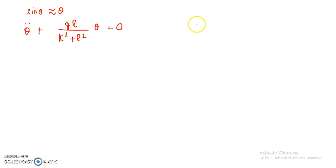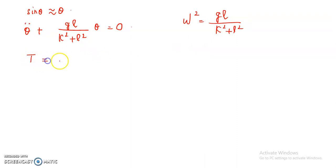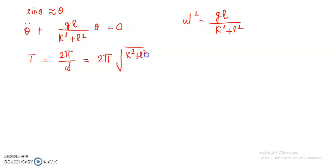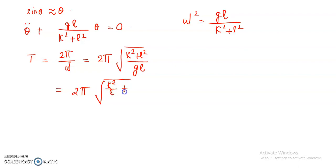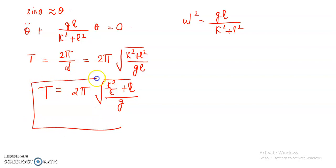This equation is similar to the simple harmonic motion equation. Comparing with the SHM form, we get omega squared equal to GL/(K² + L²). The time period T is related to omega by T equals 2π/omega, so making substitutions we get T equals 2π times the square root of (K² + L²)/(GL), which can be rewritten as 2π times the square root of (K²/L + L)/G. This is the equation for the period of oscillation of a compound pendulum executing small oscillations.